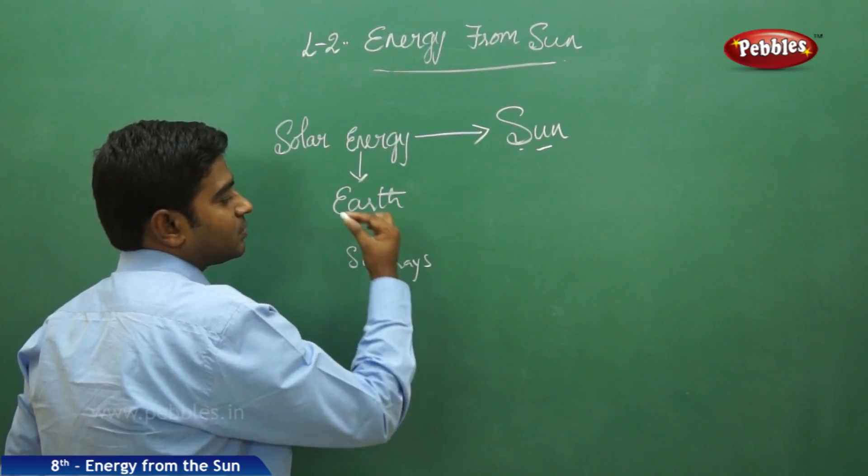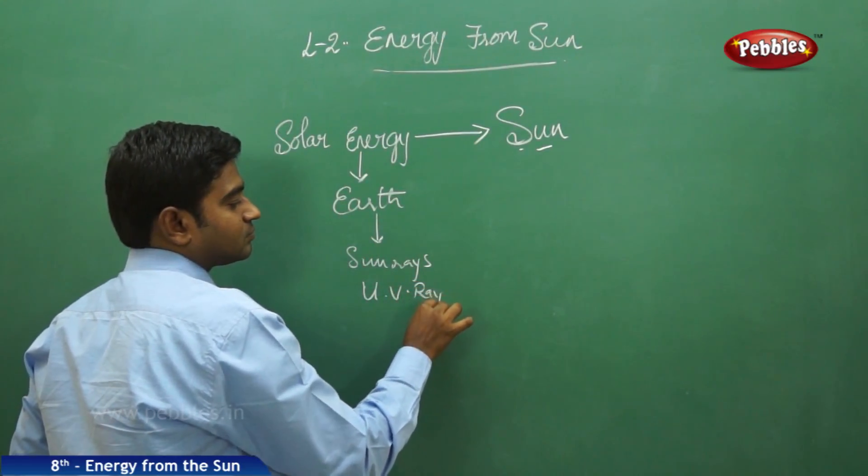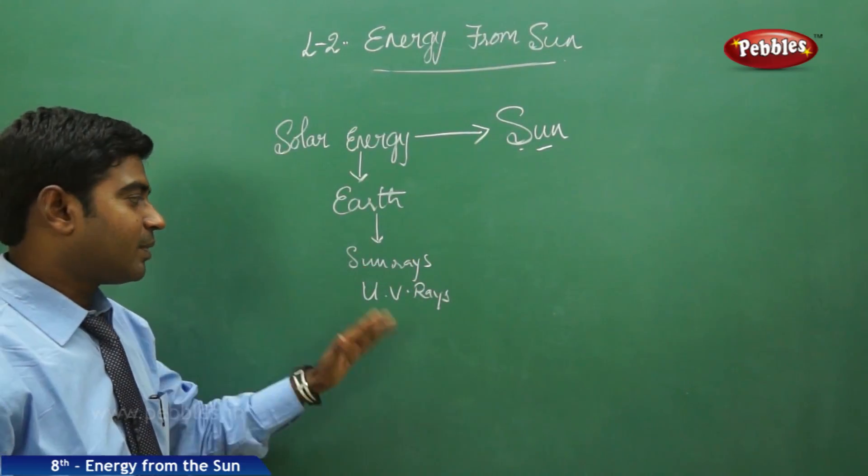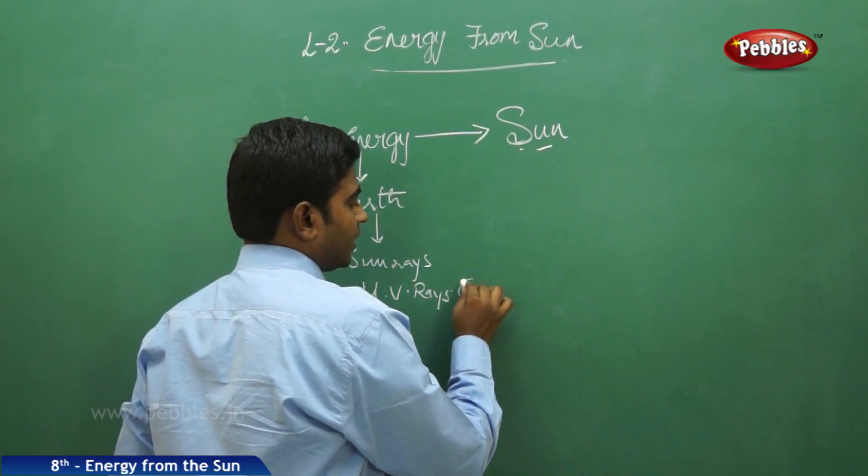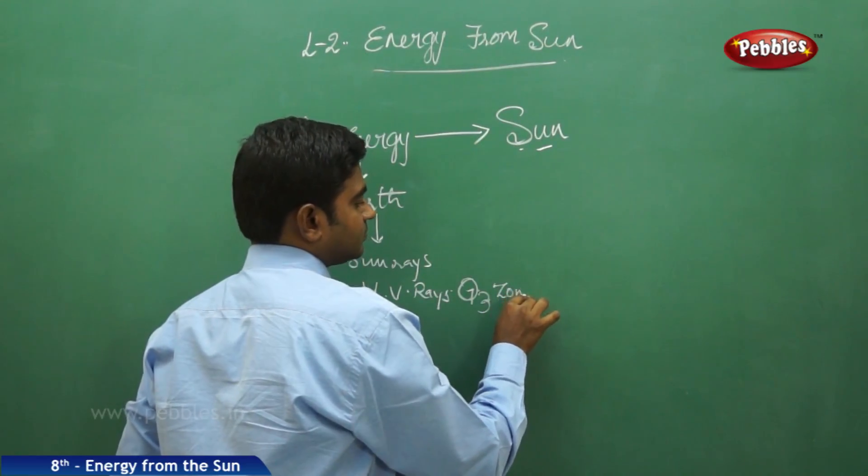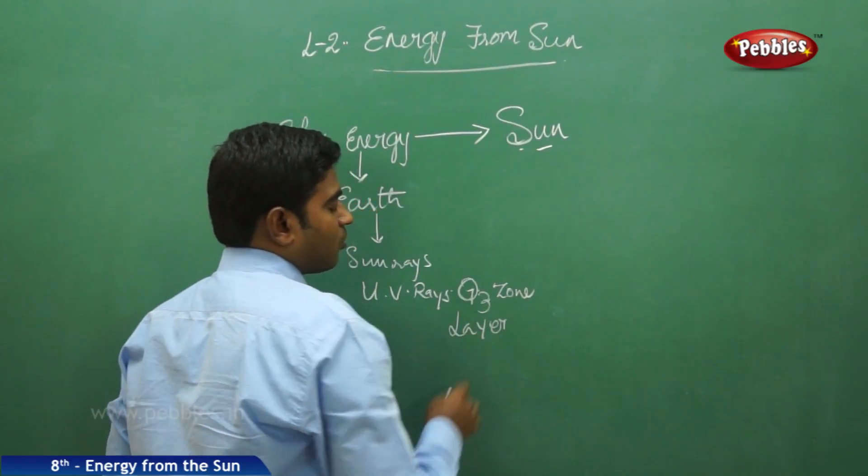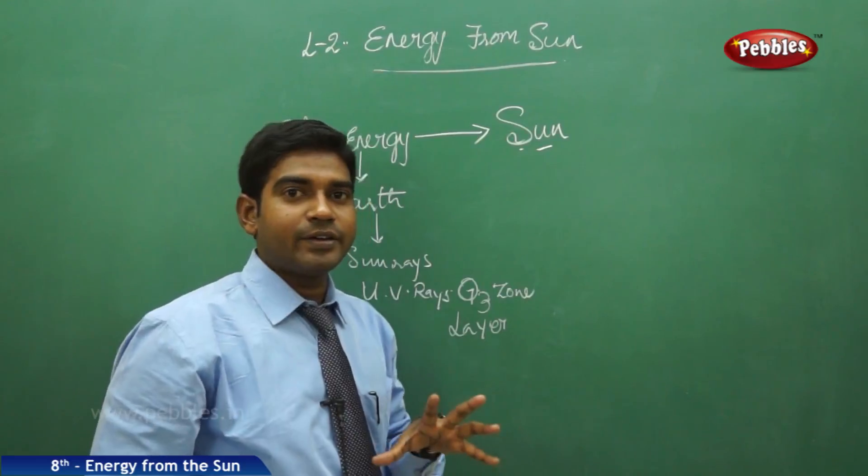In these sun rays you also get UV rays. These UV rays are blocked or stopped by the greenhouse effect or the ozone layer, O3. This ozone layer protects the earth from the dangerous ultraviolet rays.